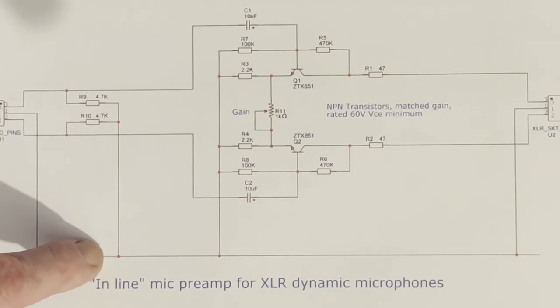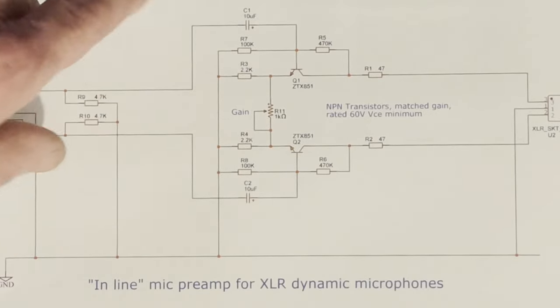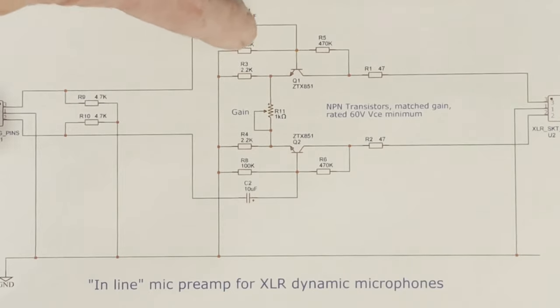All right, so these are the input load resistors, 4.7k from each input to ground, coupling capacitors 10 microfarads to the bases of the two transistors, and the bias network is 100k from the base to ground, 470k from base to collector.